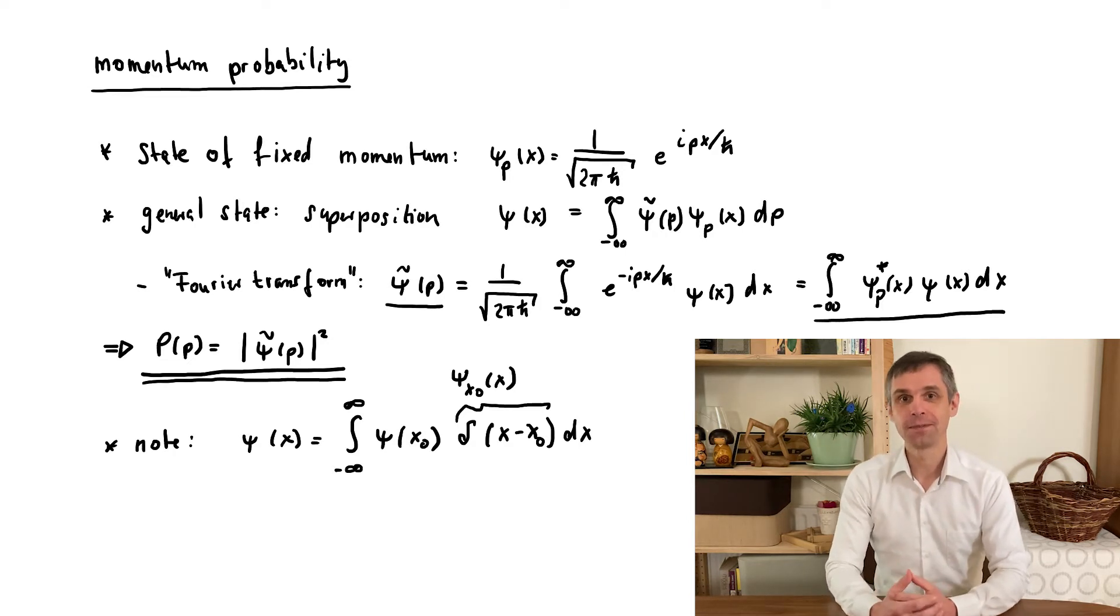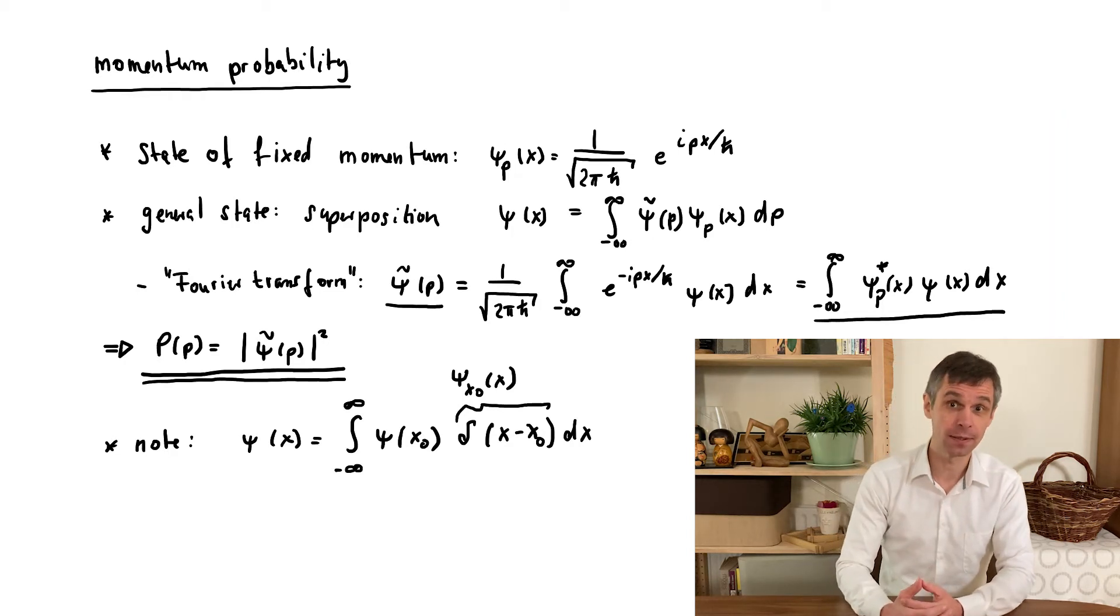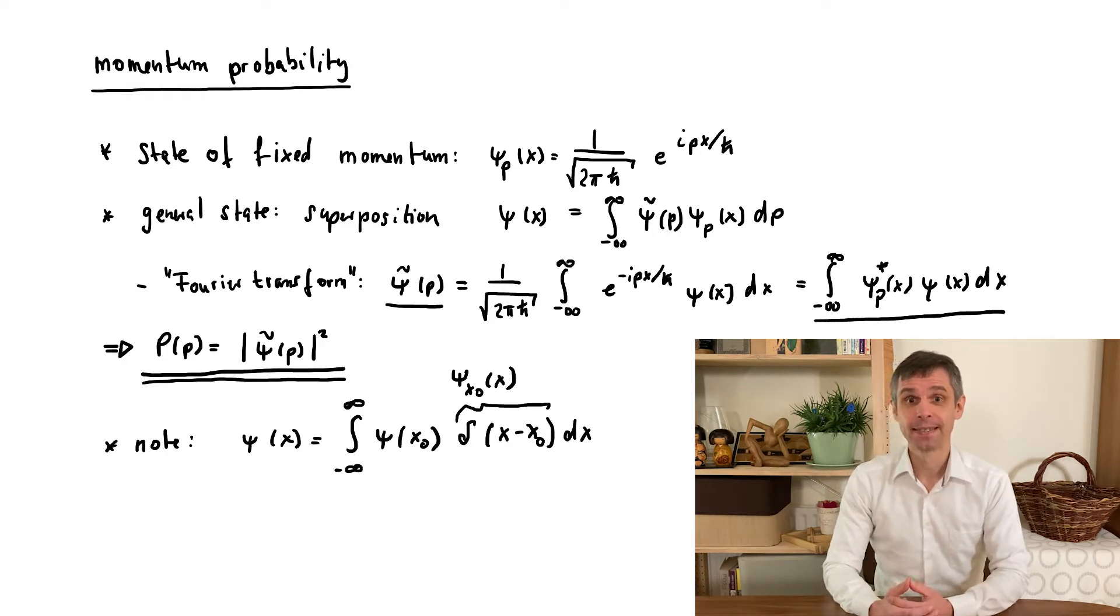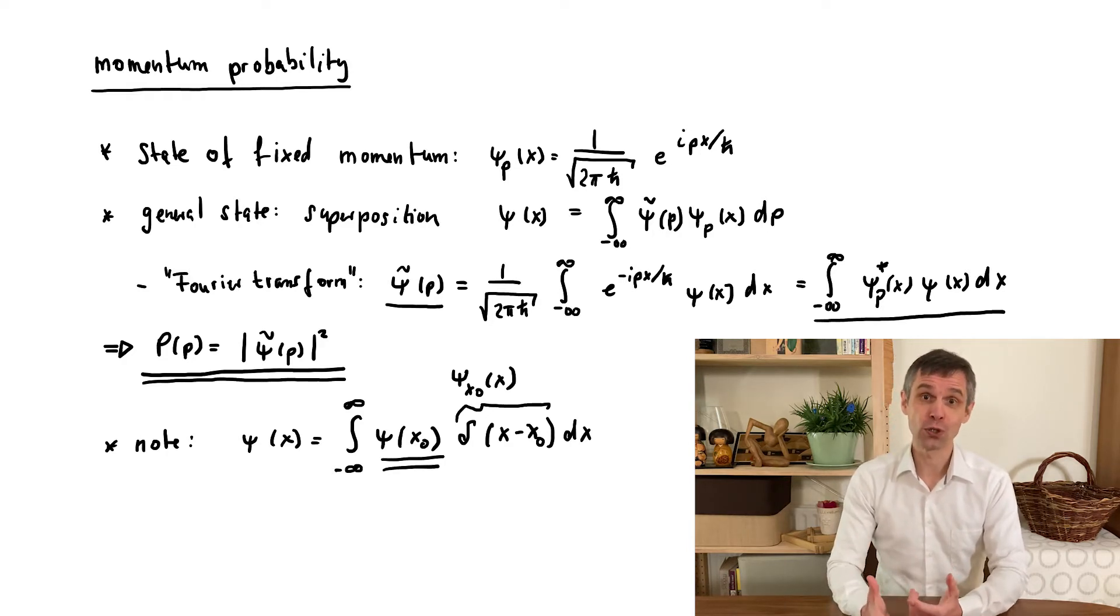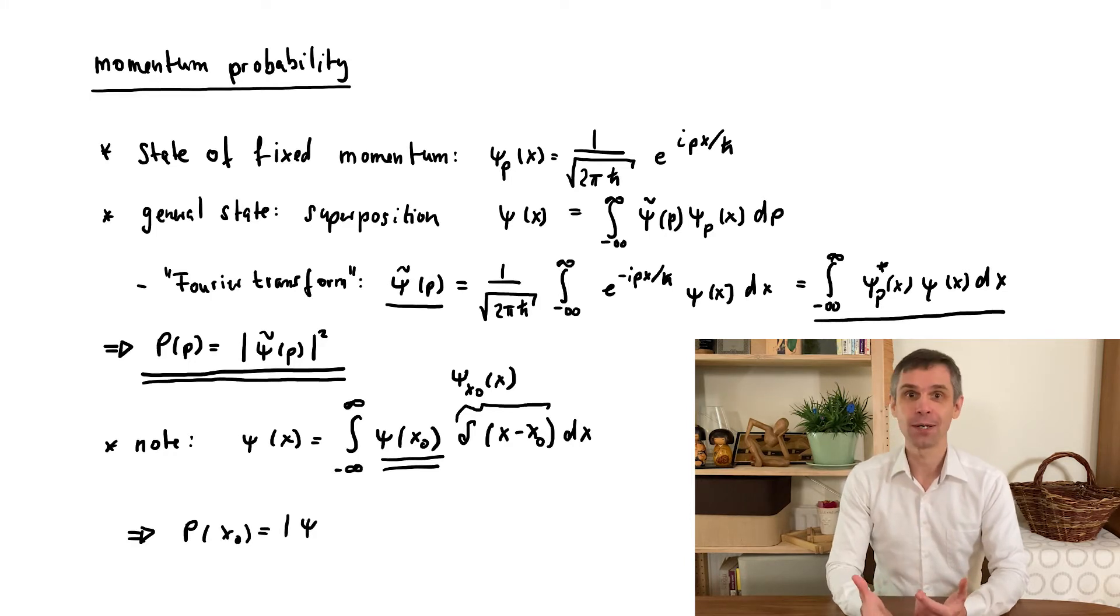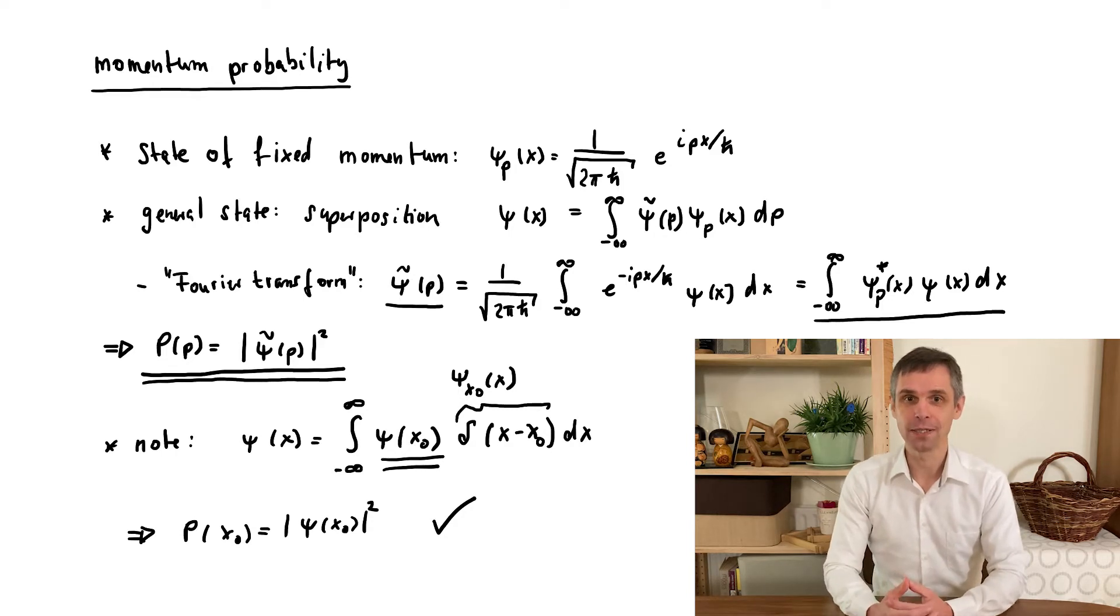According to the defining feature of delta functions, namely that it extracts the value of a function at x₀ when placed into an integral, we can write the following identity: the wave function itself reappears on the right hand side with a different interpretation, namely as the amplitude in front of the eigenstates. So now this is where ψ̃(p) also appears in relation to the momentum eigenstates, and hence we really have unified our definitions. From here it is just a small step to write down a general prescription for all possible observables.